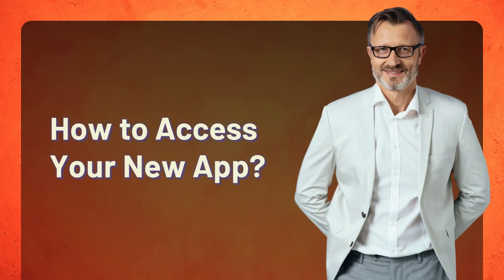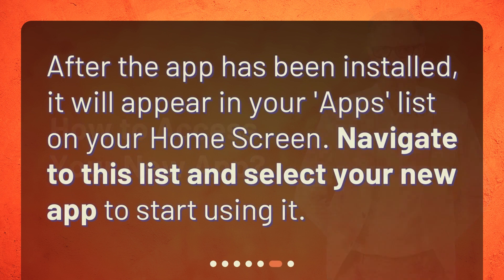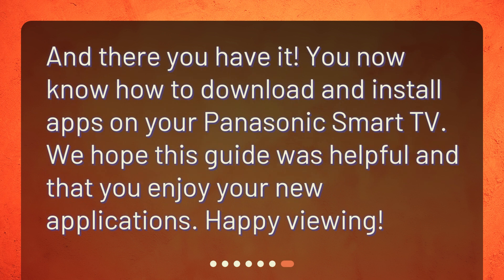After the app has been installed, it will appear in your Apps list on your home screen. Navigate to this list and select your new app to start using it. You now know how to download and install apps on your Panasonic Smart TV. We hope this guide was helpful and that you enjoy your new applications. Happy viewing!